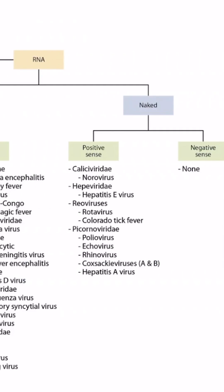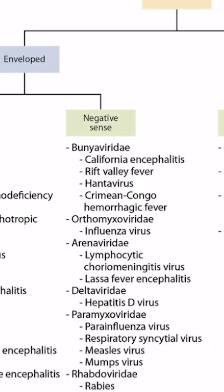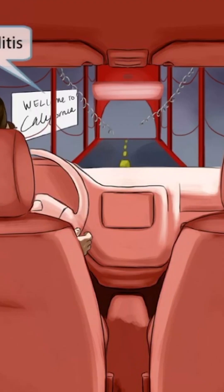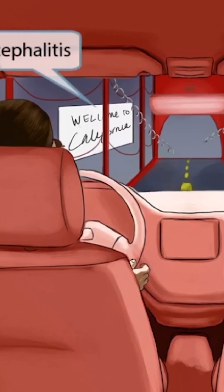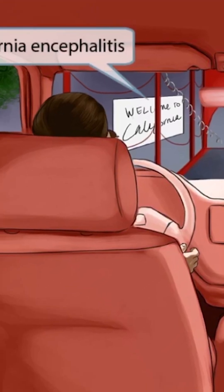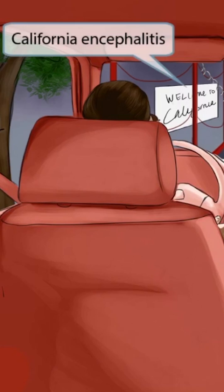This is our virus overview figure, and in this video we'll be discussing California encephalitis, which you can see right here. This scene takes place inside a car of a family going on a vacation to California. You can see they're about to pass the Golden Gate Bridge, and there is a sign that says 'Welcome to California.' All of these references to California should help you remember that this image is all about California encephalitis.